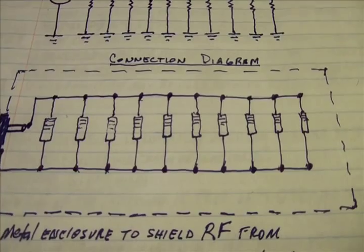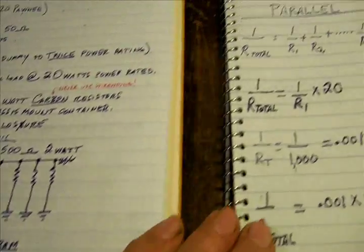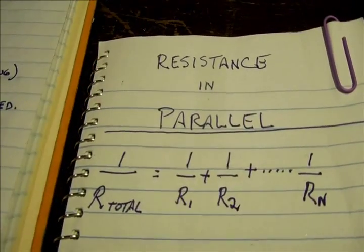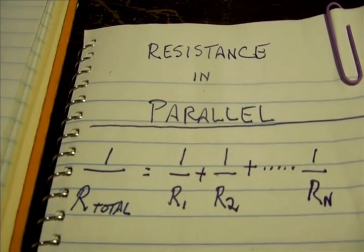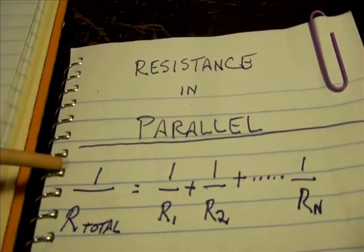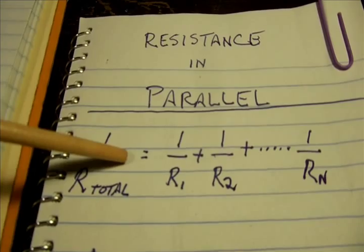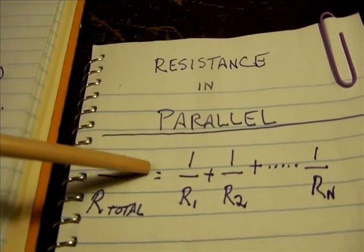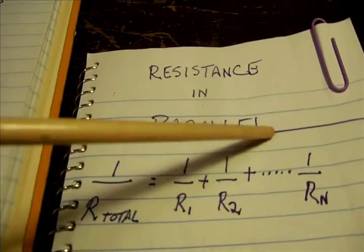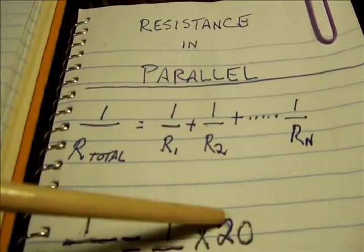It's very, very simple. No big deal. And of course, resistance in parallel, 1 over R total equals 1 over R1 plus 1 over R2, on and on for the total number in your required.